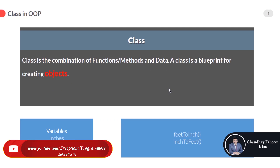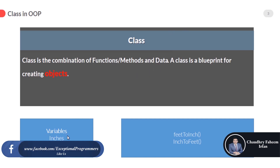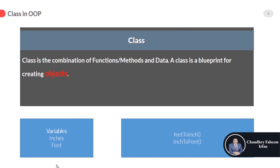A class is the combination of functions or methods and data. A class is a blueprint for creating objects. A method in object oriented programming is a procedure associated with a class — it defines the behavior of the objects created from the class. Data refers to variables like inches and feet, and methods or functions can convert feet to inches or inches to feet.